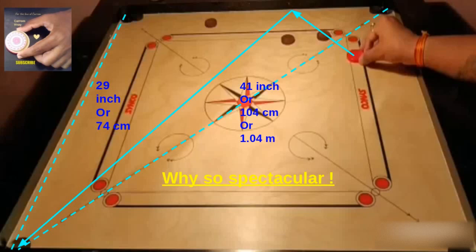The length of the carrom board is 29 inches or 74 centimeters. So the diagonal or the maximum length from one side to another side approximately is 41 inches or 104 centimeters. So every time a third pocket is played, you see the coin covering the whole diagonal of the carrom board, many times covering even a larger distance than the diagonal or more than one meter.